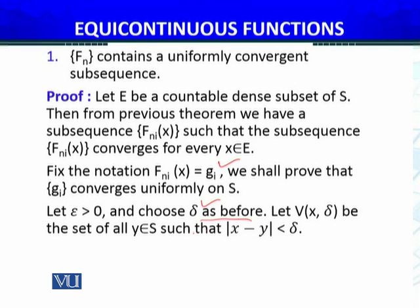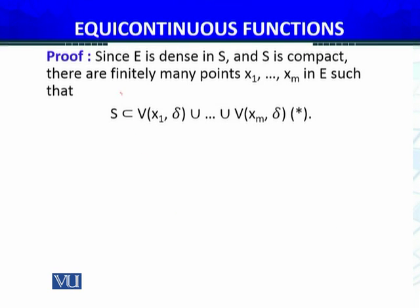Let V(x, delta) be the set of all y in S such that |x − y| < delta. By compactness, this open set covers S. Since E is dense and S is compact, there are finitely many points in E such that these open sets cover S.